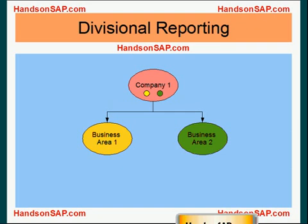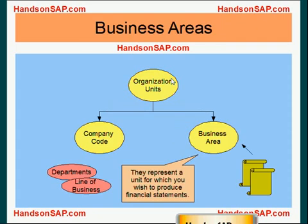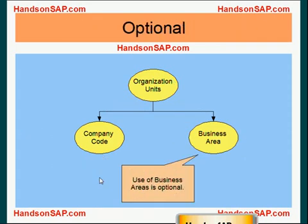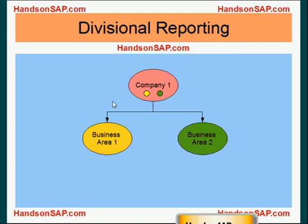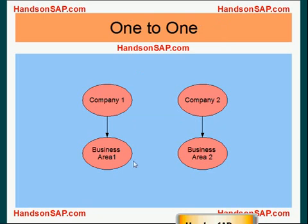Here's an example of divisional reporting. Consider company one, which has two departments: yellow and green. You can produce financial reports at the company level because the company is registered as a legal entity with a company code. But if you also want to produce financial reports at the divisional level, you can create two business areas — one representing the yellow division and one representing the green division. However, doing a one-to-one implementation of company and business area doesn't really make sense and defeats the whole point of the business area concept — that would be a wrong implementation.